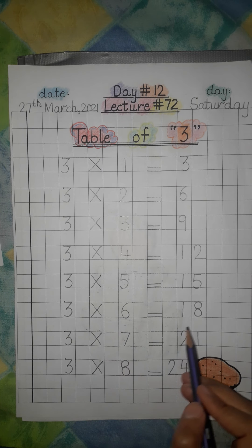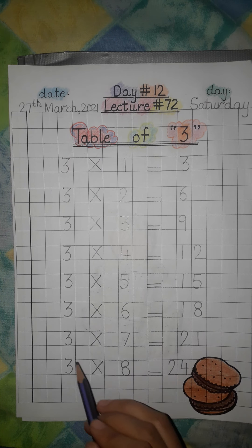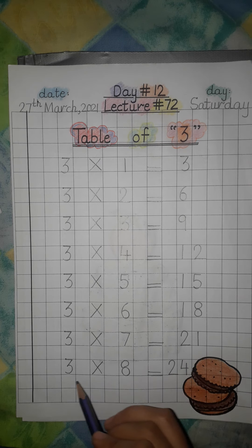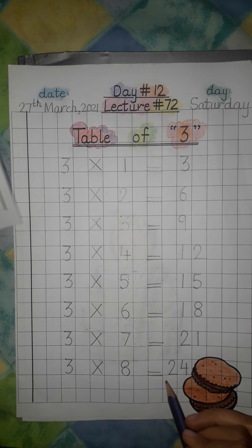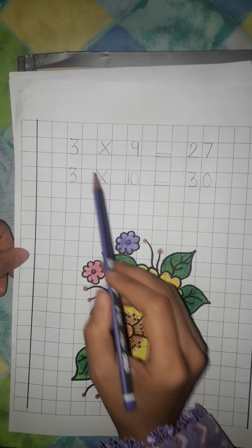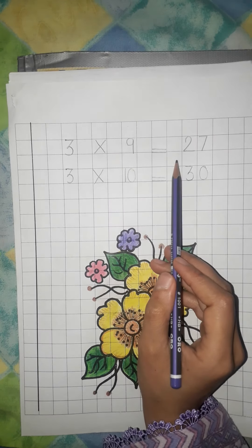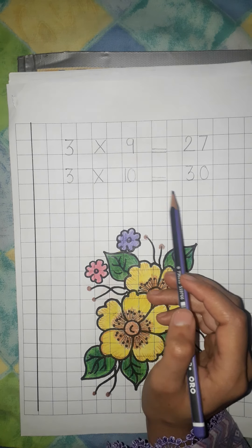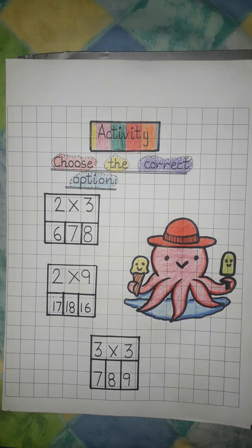Three sixes are eighteen, three sevens are twenty one, three eights are twenty four, three nines are twenty seven, three tens are thirty. Dear students, now we are going to do an activity.